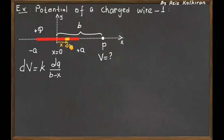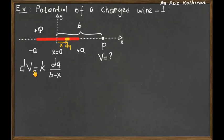If the position of the piece from the origin is x, and the distance of point P from the origin is b, then the distance from charge dq to point P is (b - x). Using the general expression for a point charge potential, kq/r, the infinitesimal potential created by dq is k·dq divided by (b - x).